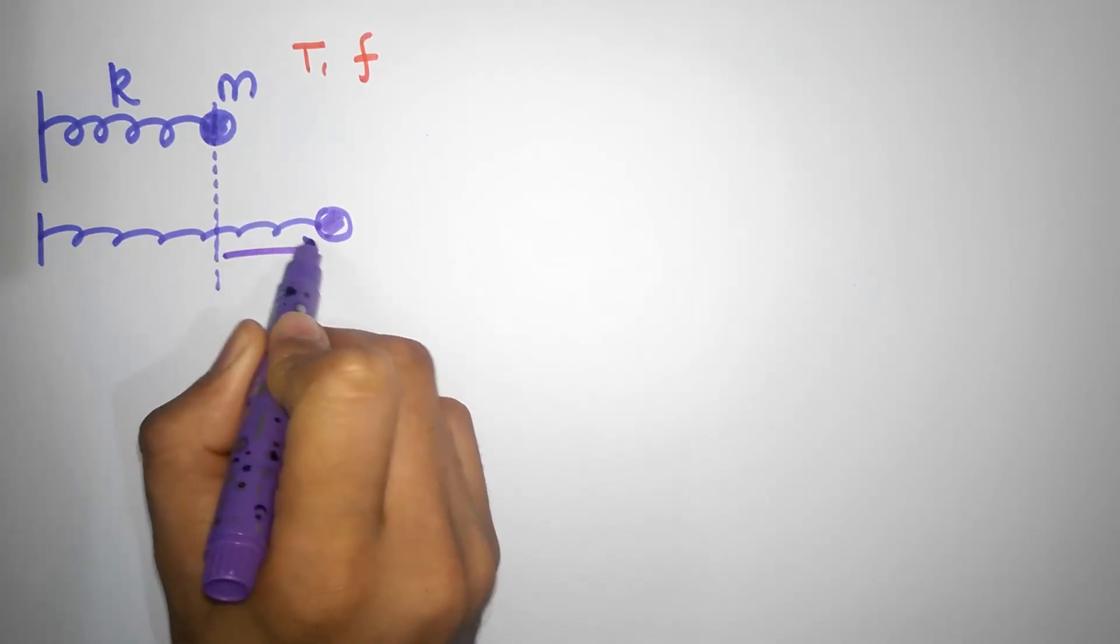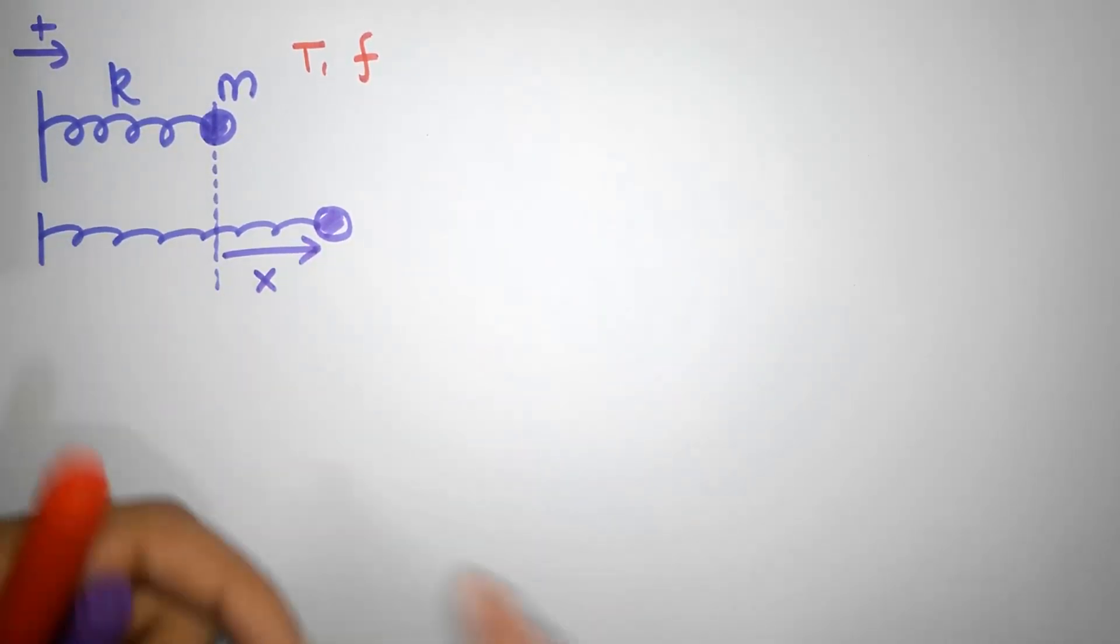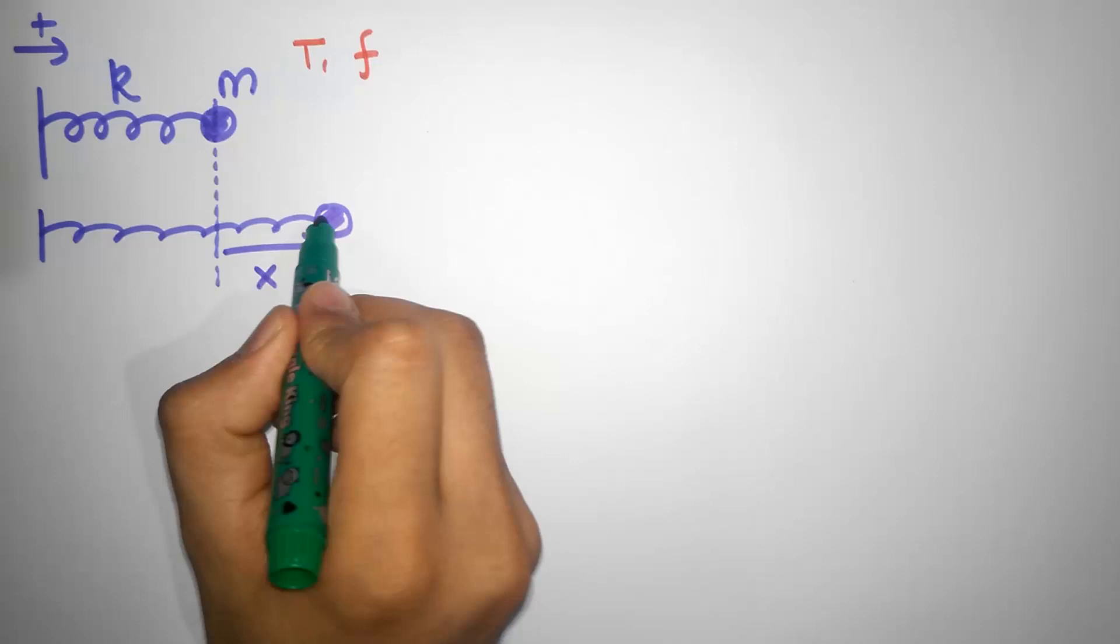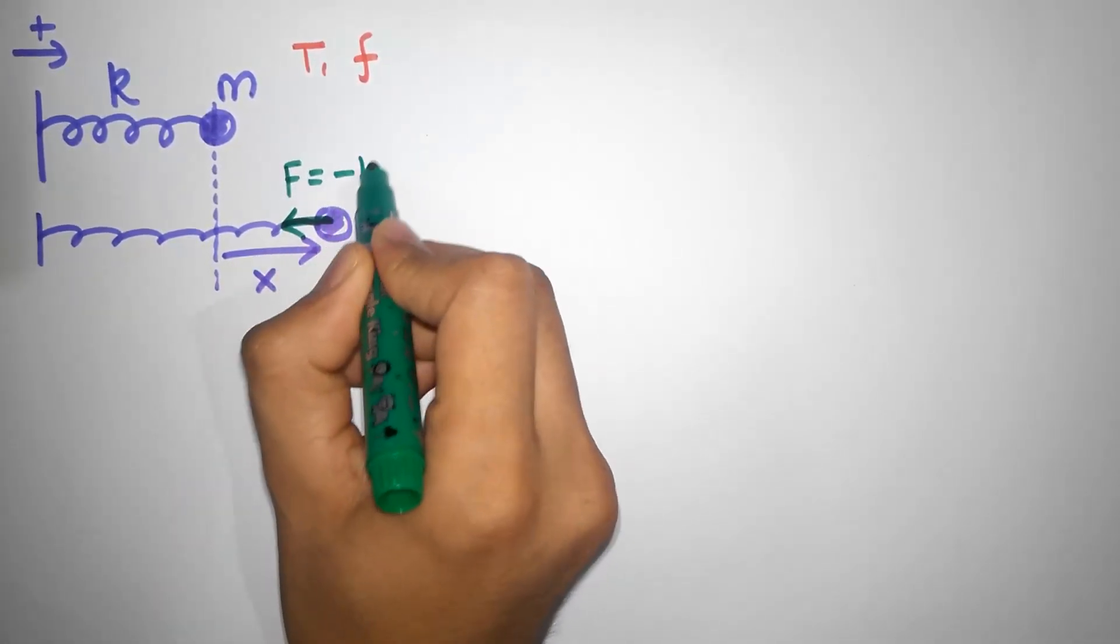Let's call this direction as positive and that's my displacement X. So this is positive. How many forces are acting on this? There's only one force and that's a spring force, and the spring force acts this way and that's going to be minus KX.